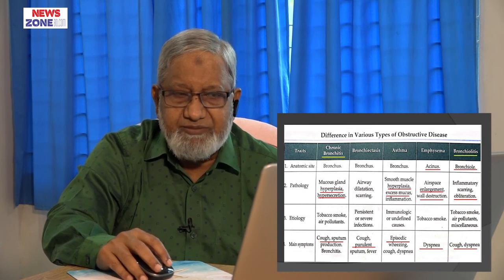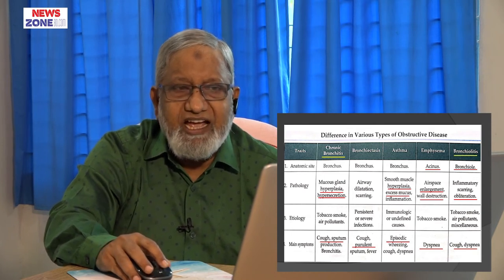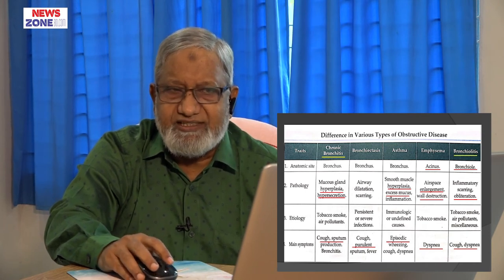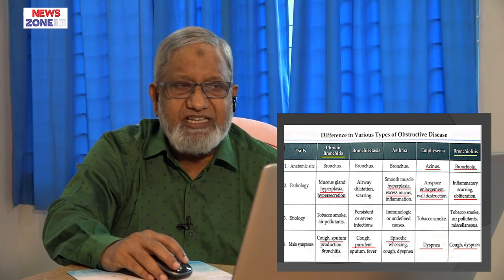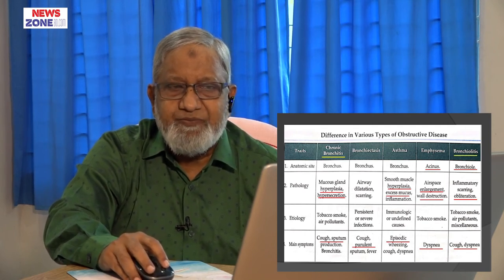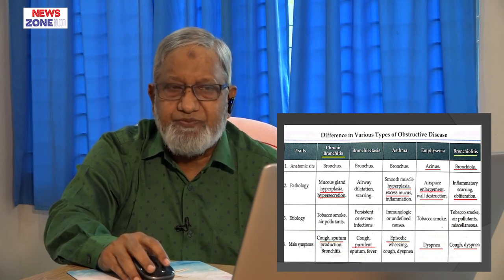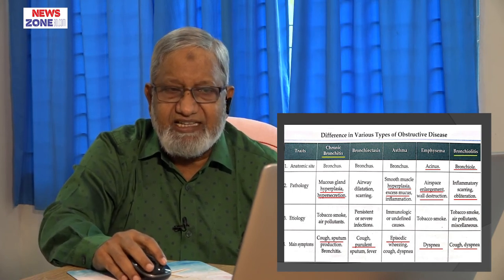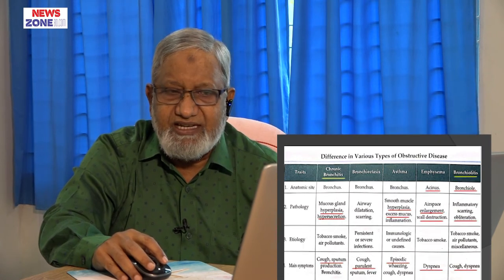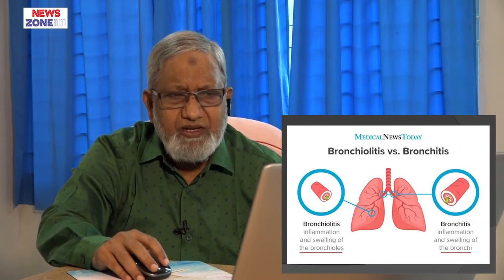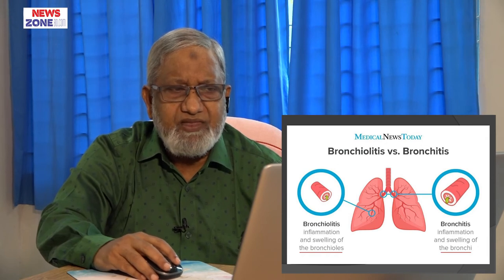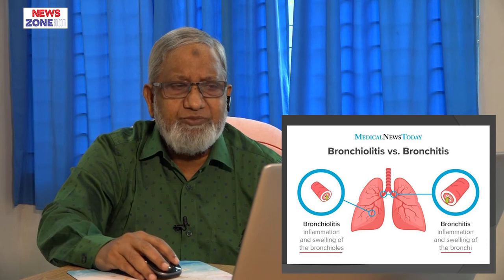In bronchiolitis — distinguishing from bronchitis — in bronchitis the anatomic site is the bronchus, but in bronchiolitis the site of lesion is the bronchioles. Pathology involves inflammatory scarring, dilatation, and obliteration. Other causes include tobacco smoke and air pollutants, with symptoms of cough and dyspnea. The picture shows bronchitis as inflammation and swelling of the bronchus, while bronchiolitis is inflammation and swelling of the bronchioles.